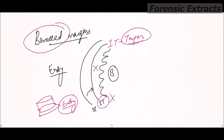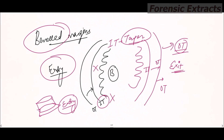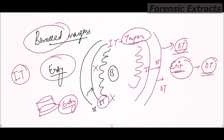The inner table will have tapered margins towards the entry wound. Similarly, towards the exit wound, the inner table is supported by the outer table, but there is no support for the outer table. So the outer table will have beveled or tapered margins towards the exit wound. In summary, the inner table has beveled margins towards the entry wound, and the outer table has beveled margins towards the exit wound.